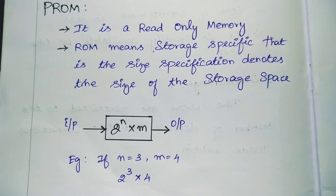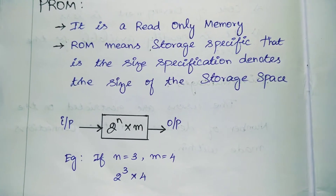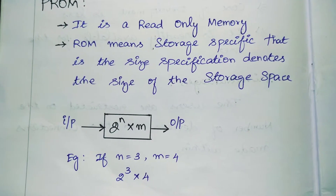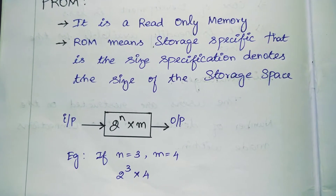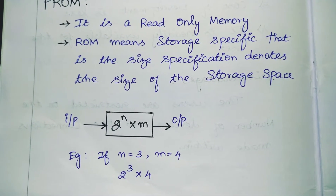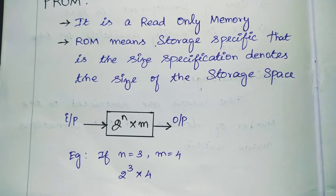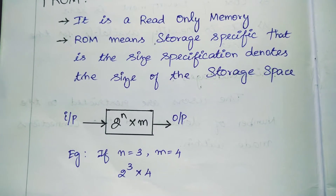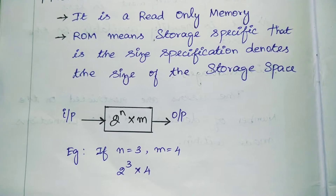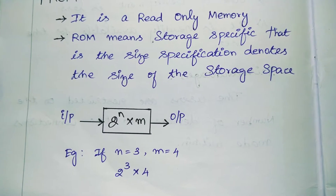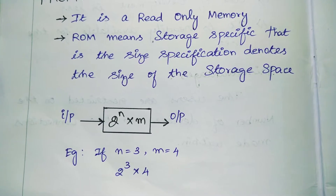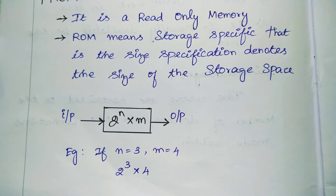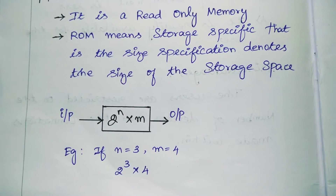PROM is the read-only memory. The size specification denotes the size of the storage space and is written as 2^N × M, where N denotes the number of inputs and M denotes the number of outputs. For example, if N equals 3 and M equals 4, that gives 2^3 × 4.